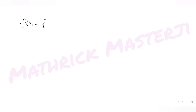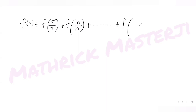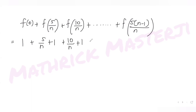Adding all the functions: f of 0 plus f of 5 over n plus f of 10 over n and so on till f of 5 times n minus 1 over n. This gives us 1, plus 5 over n plus 1, plus 10 over n plus 1, and likewise up to 5 times n minus 1 divided by n plus 1.